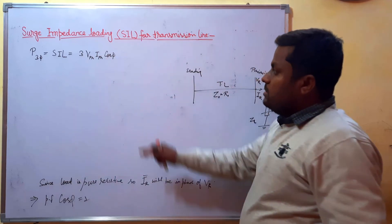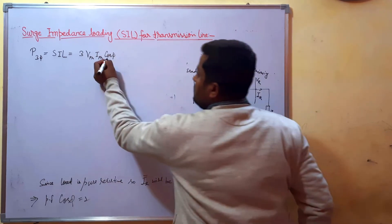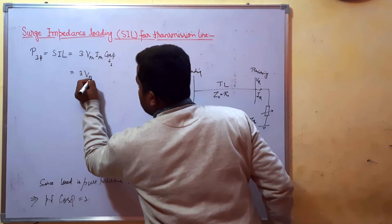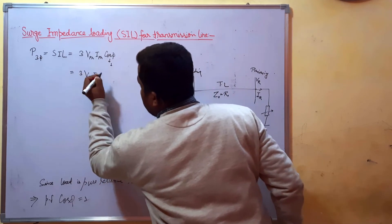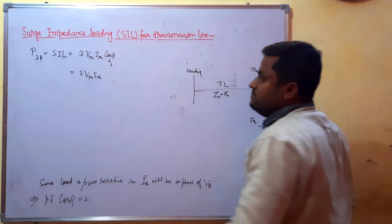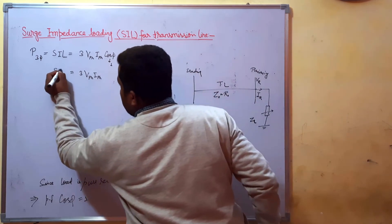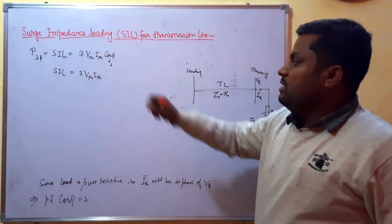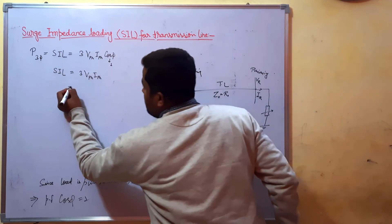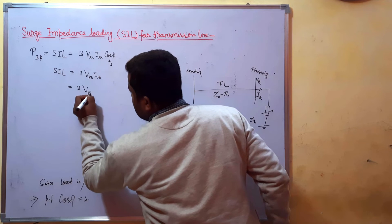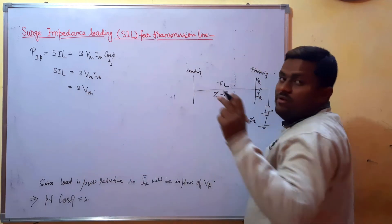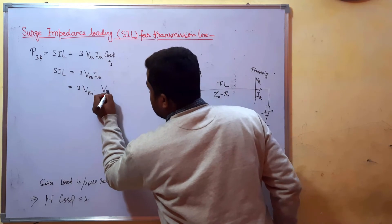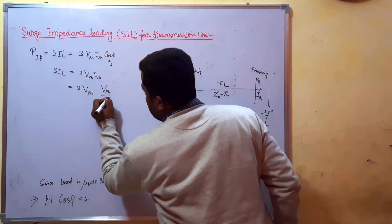The SIL equals three times Vphase times Iphase times cos φ. Since cos φ equals 1, this simplifies to SIL = 3 × Vphase × Iphase. Here Iphase can be written as Vphase / Z0.